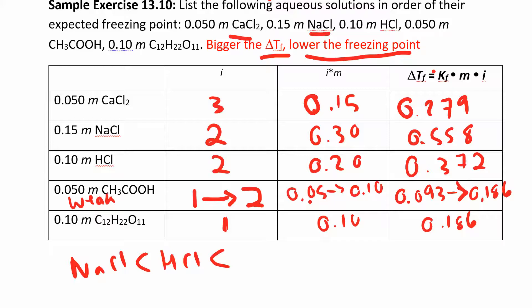Then we had HCl, then we had CaCl2, and then sucrose, C12H22O11, and then the highest one would be the acetic acid. All right. So again, the bigger the freezing point depression, the bigger that delta T, the lower the freezing point is going to be.